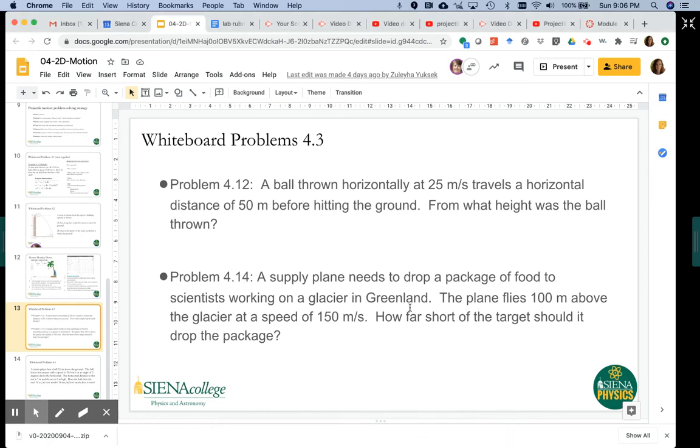Two more projectile problems coming your way. All right, so the first one: a ball thrown horizontally at 25 meters per second travels a horizontal distance of 50 meters before hitting the ground. From what height was the ball thrown?